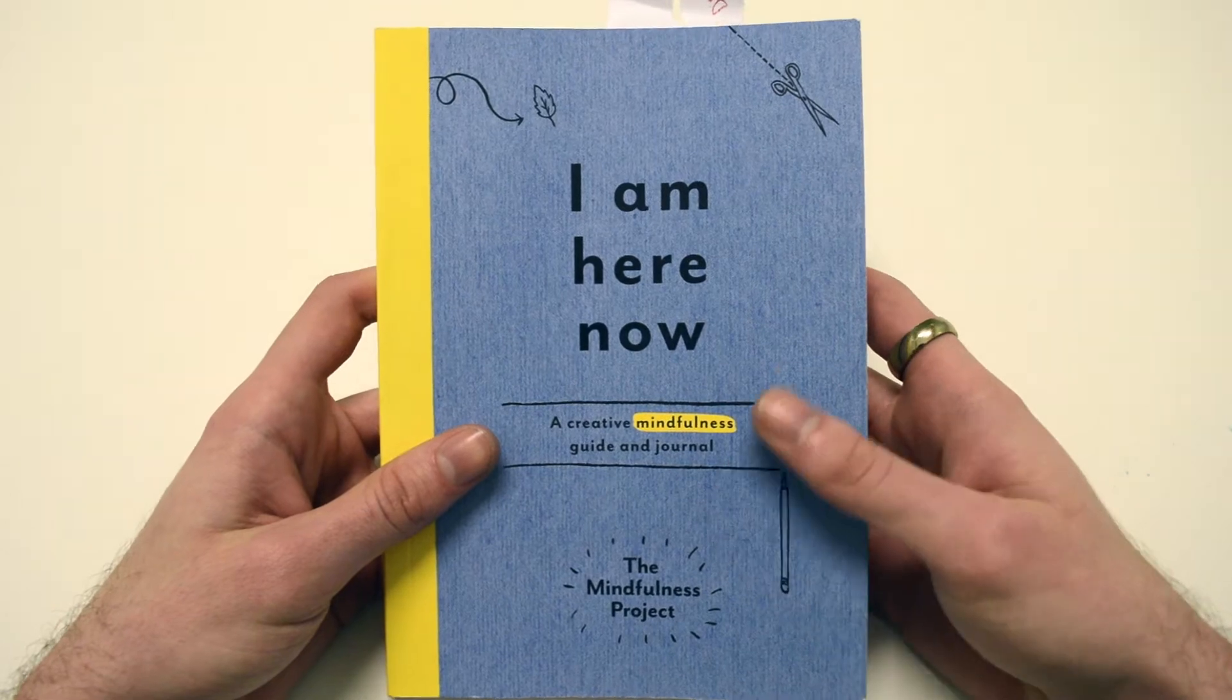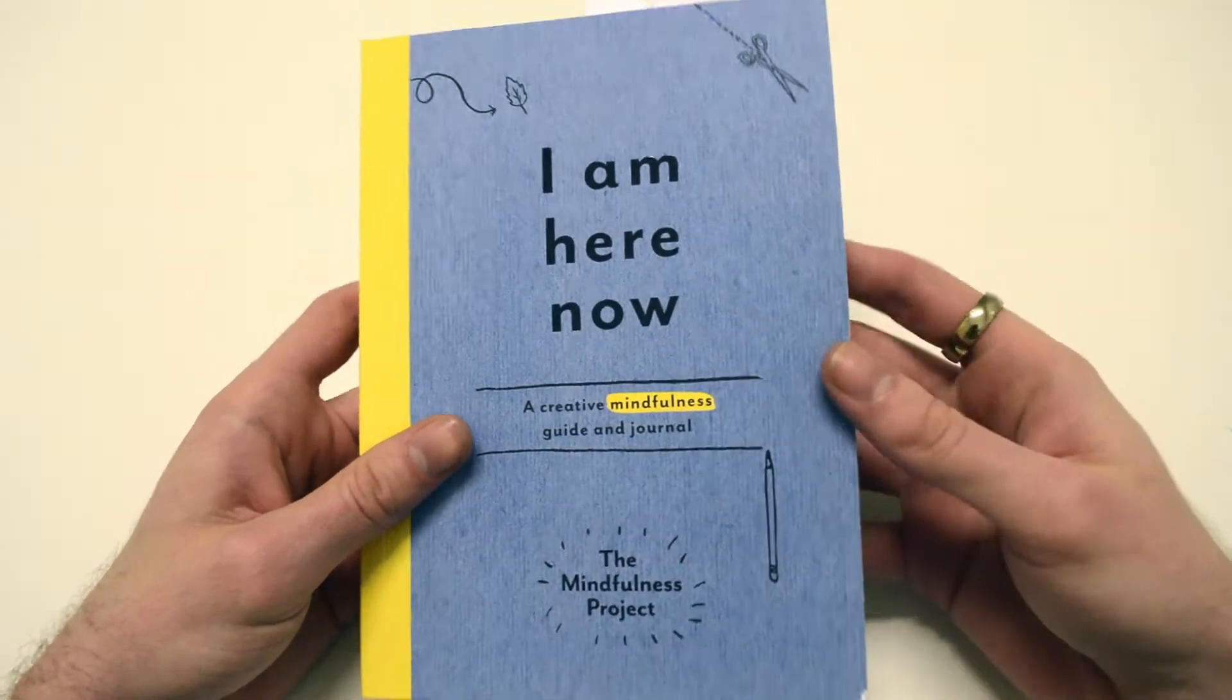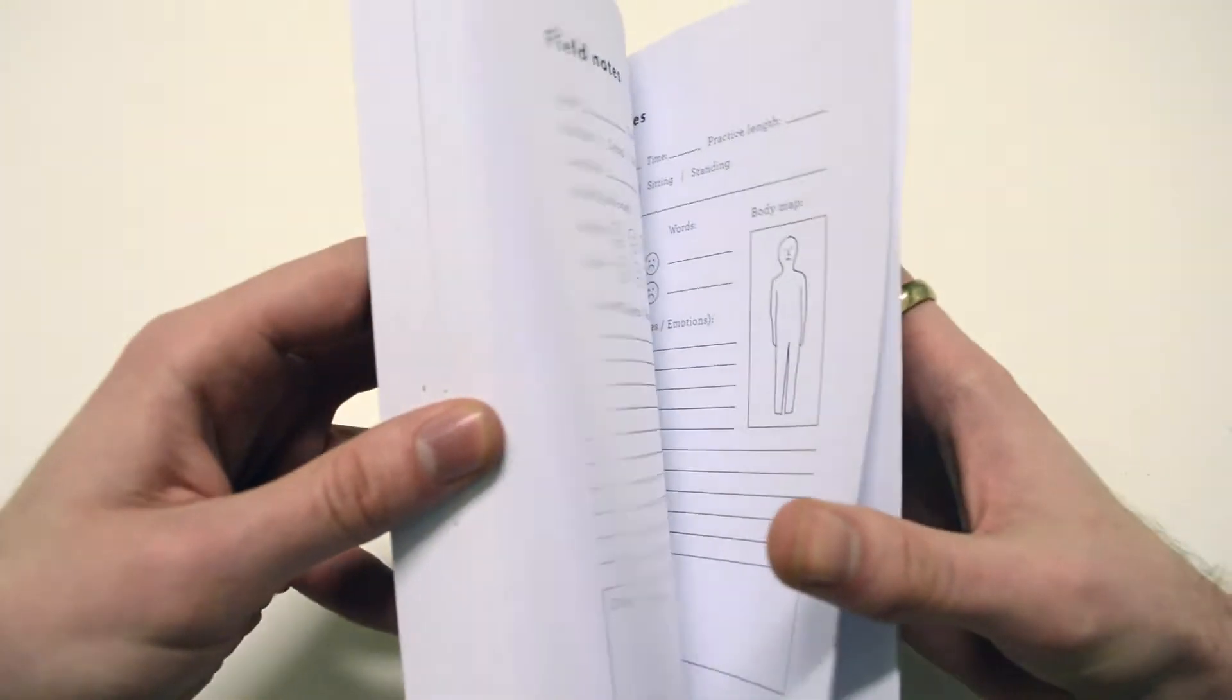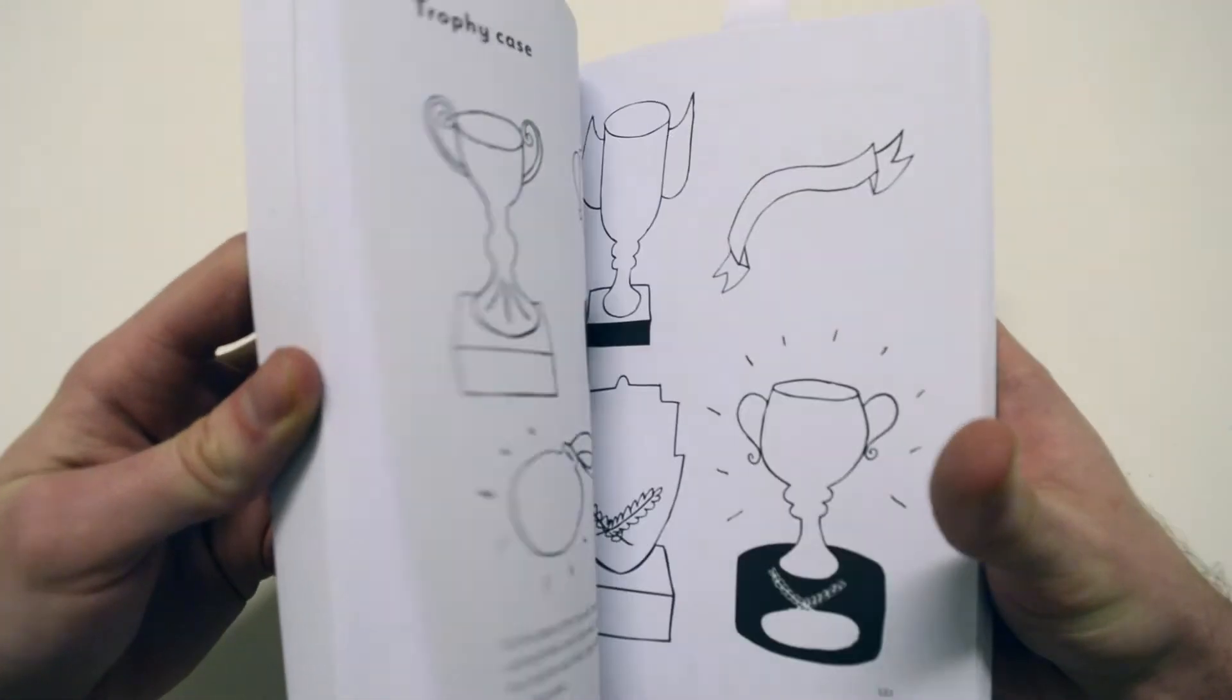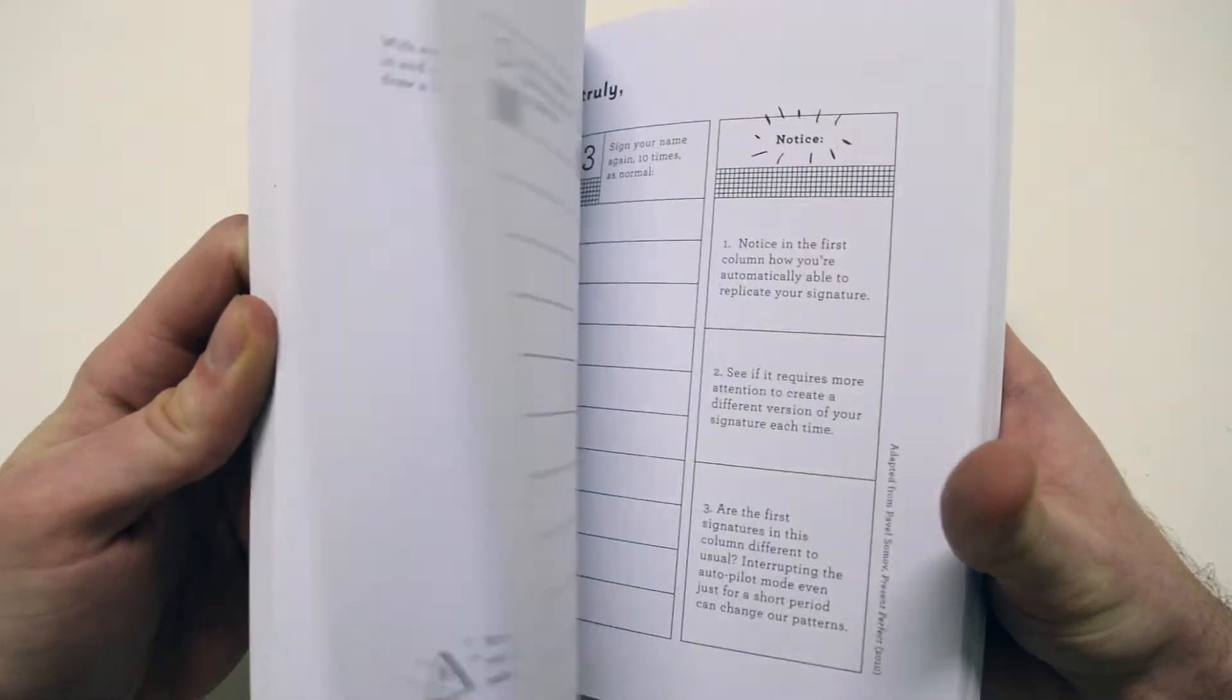I'm reviewing this creative mindfulness guide and journal called I'm Here Now. It's produced by the Mindfulness Project. I was given this book as a gift and I quite like it. It's an interactive way to teach mindfulness, which is different because normally when you think of mindfulness you think of yoga and stuff like that.